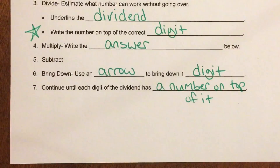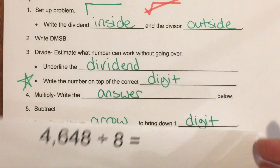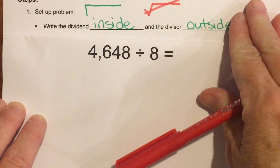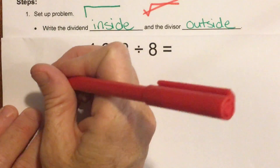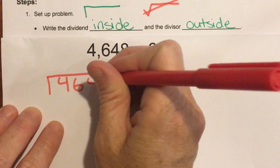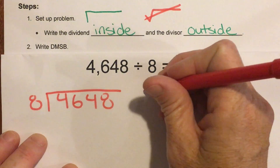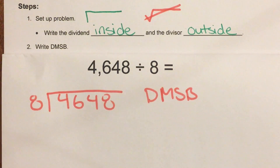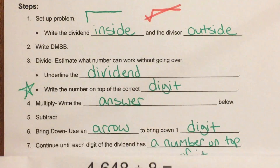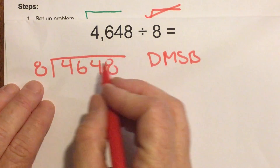Let's try another one. This time they didn't set it up for me, so I need to make my division sign, put my dividend inside, and my divisor outside. Then write daddy, mommy, sister, brother as my checklist. Now I'm at daddy — divide. Can eight fit into four? No. Can eight fit into 46? Yes.